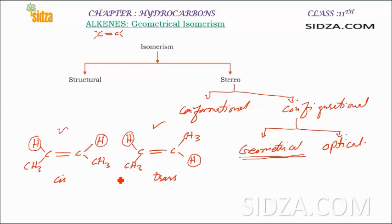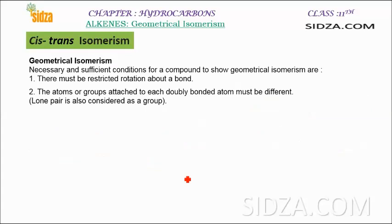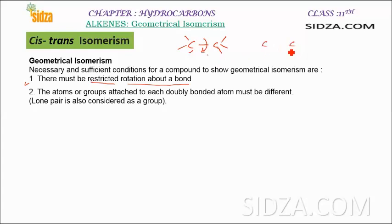Not all alkenes can have geometrical isomers — there are certain conditions. The first condition is that there must be restricted rotation about a bond. Around a carbon-carbon single bond, rotation is possible. But if you have a double bond, rotation around the carbon-carbon double bond is hindered. So that is why geometrical isomers are found in alkenes — rotation around a single bond is possible but not around a double bond.